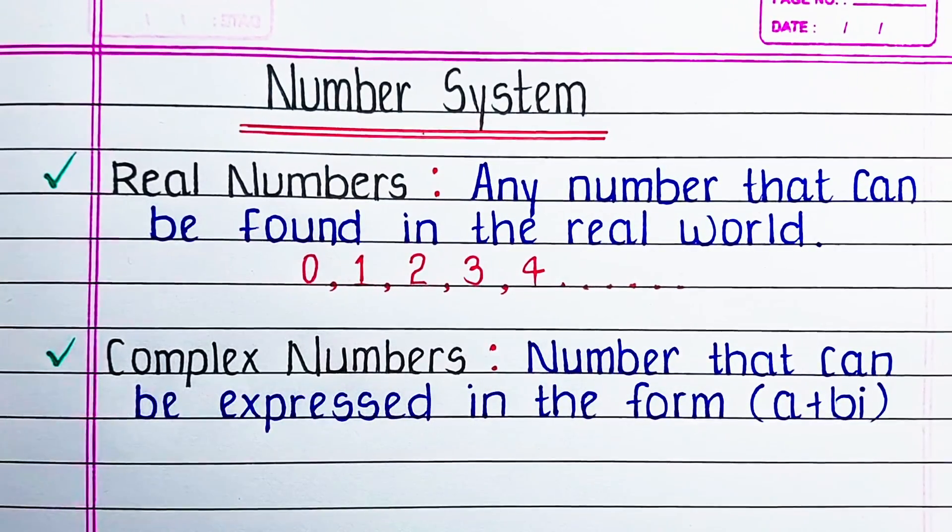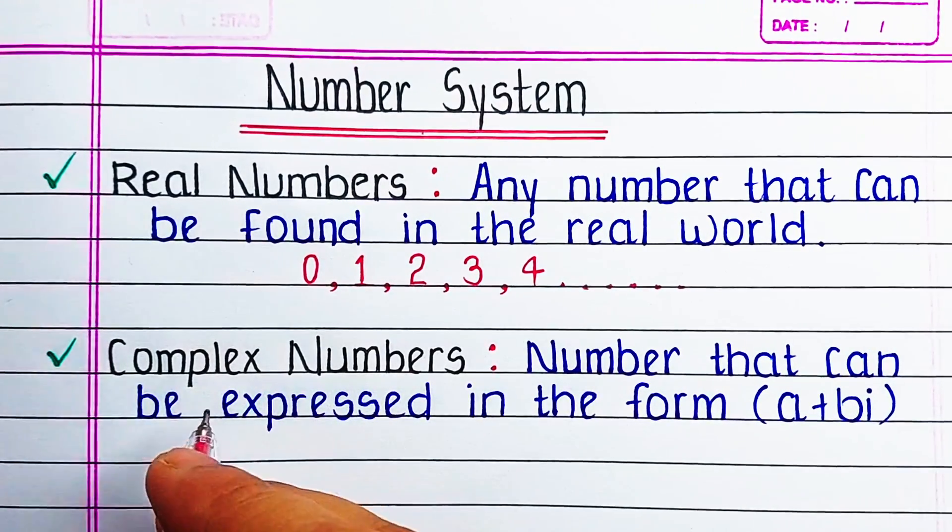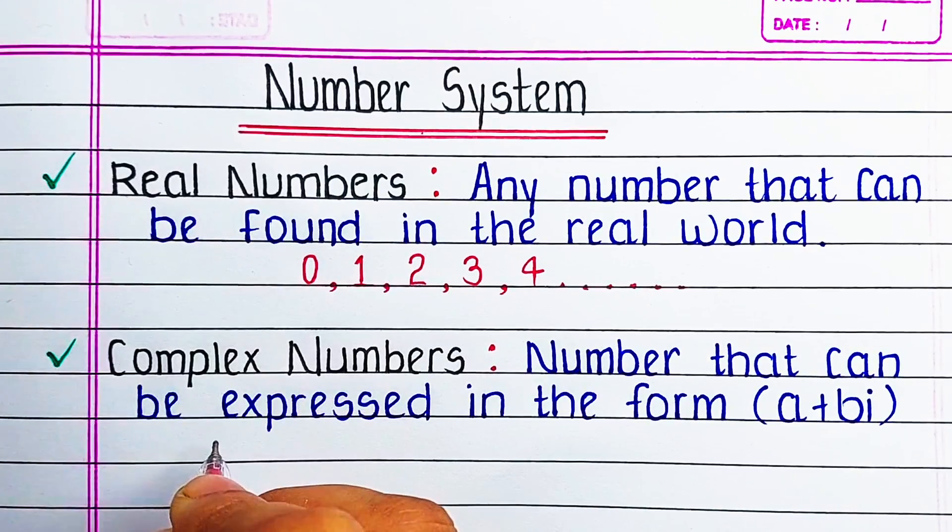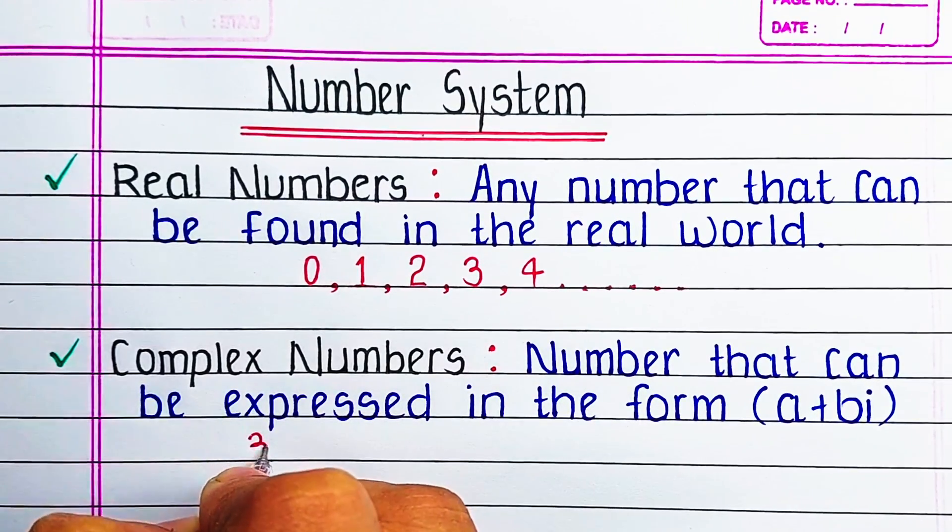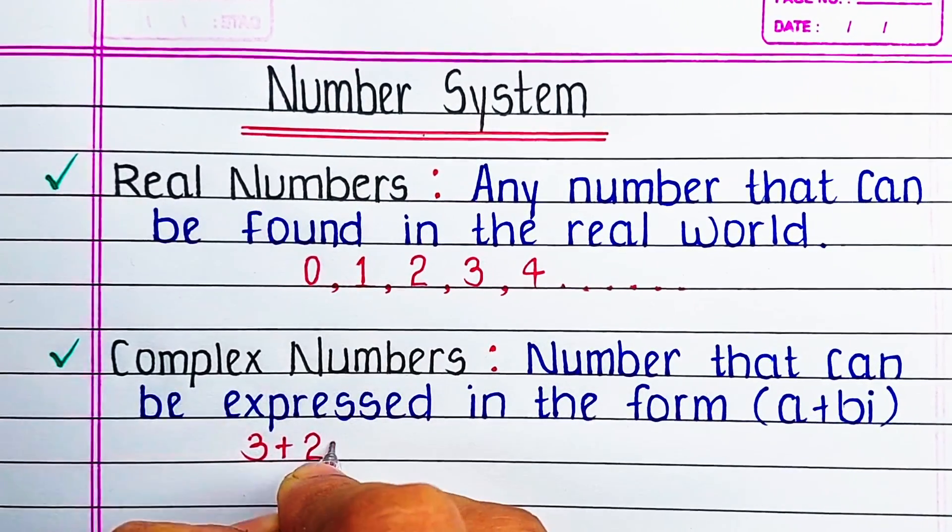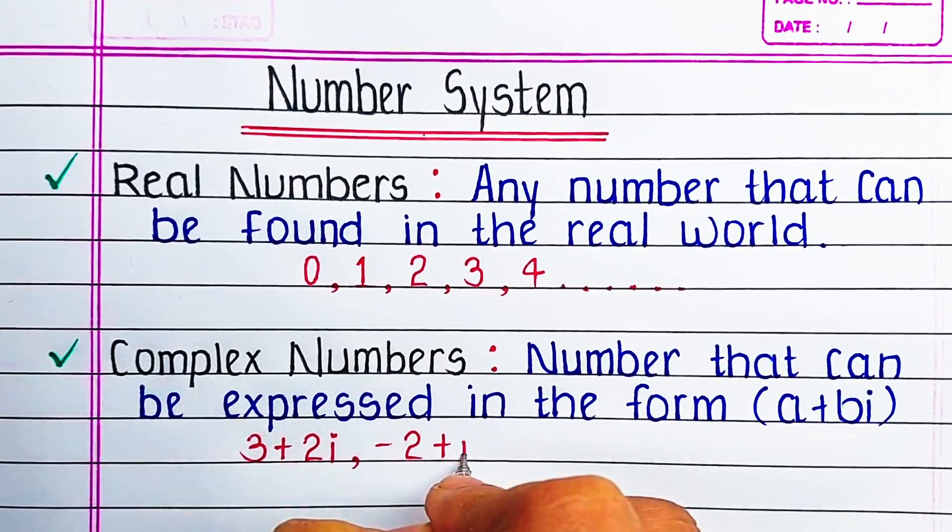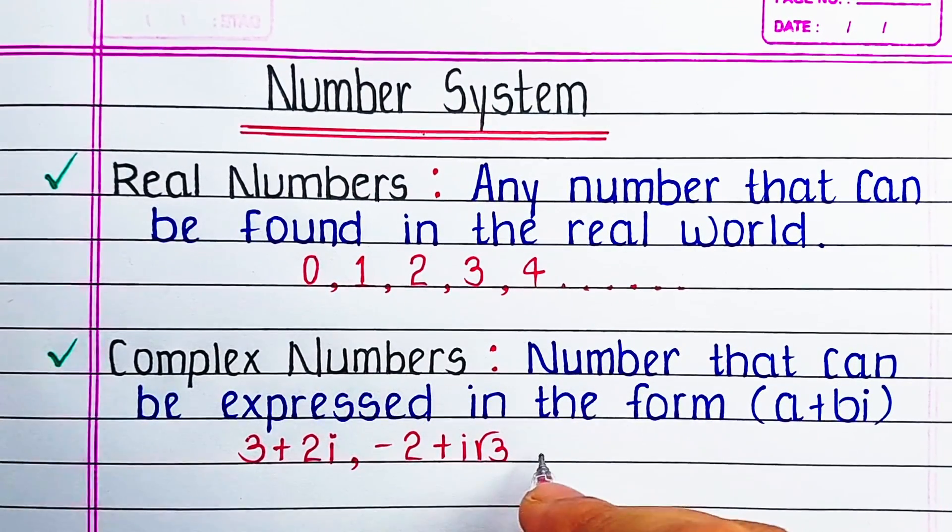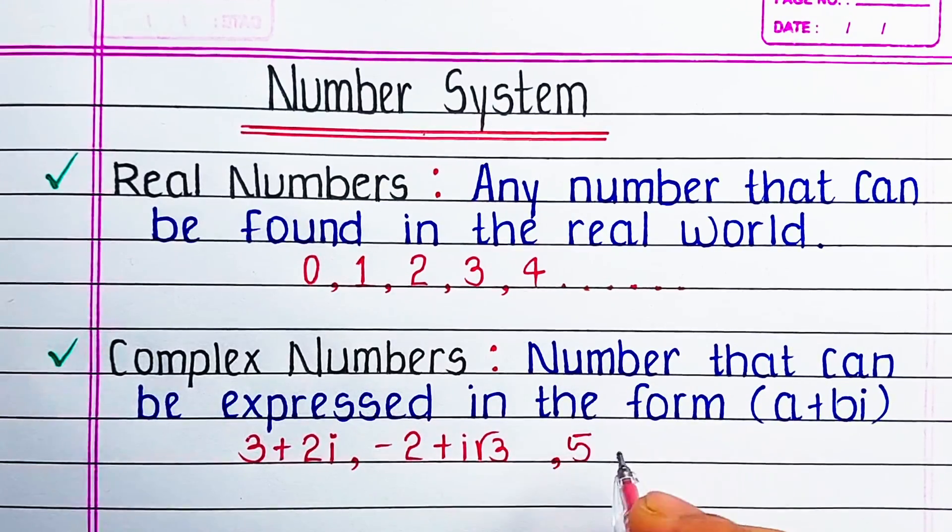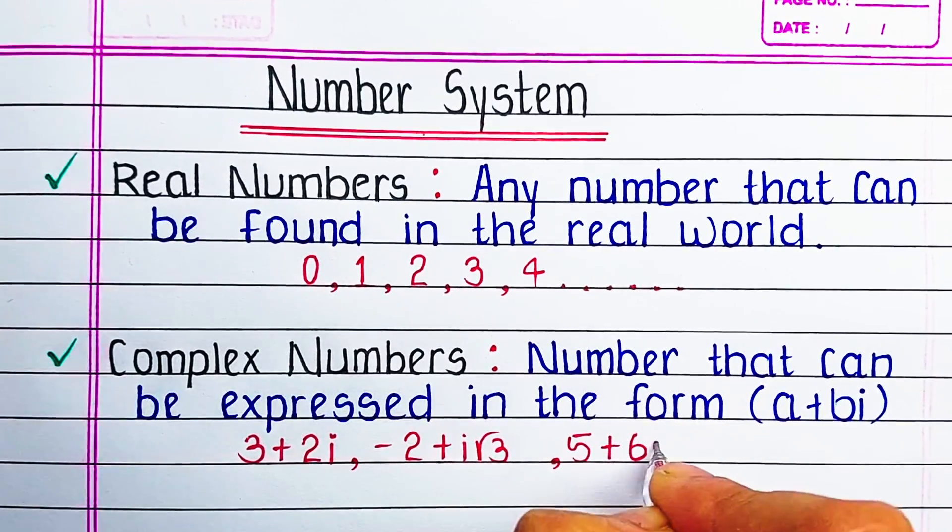Second type of number is complex numbers. The type of numbers that can be expressed in the form of a plus bi is known as complex numbers. For example, 3 plus 2i, minus 2 plus i root 3, 5 plus 6i, etc.